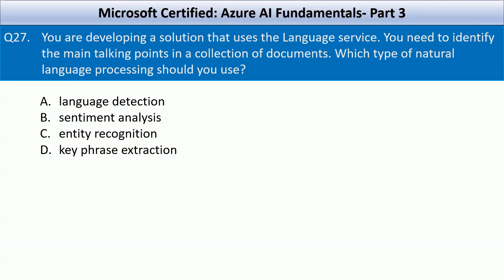Hey friends, welcome to part 3 of our Azure AI Fundamentals ultimate course. Let's start with question number 27. You are developing a solution that uses the language service. You need to identify the main talking points in a collection of documents. Which type of natural language processing should you use? Your options are language detection, sentiment analysis, entity recognition, and key phrase extraction. The correct answer here is key phrase extraction.